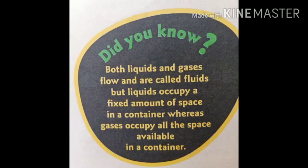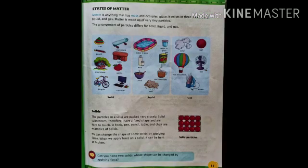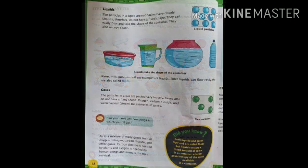But liquids occupy a fixed amount of space in a container, whereas gases occupy all the space available in a container. Let's have a quick recap of what we learnt in sessions 1 and 2. We learnt about states of matter — what is matter, mass — and the arrangement of particles, which differs for solids, liquid, and gas. We learnt about solids and its properties, then liquids and gases.